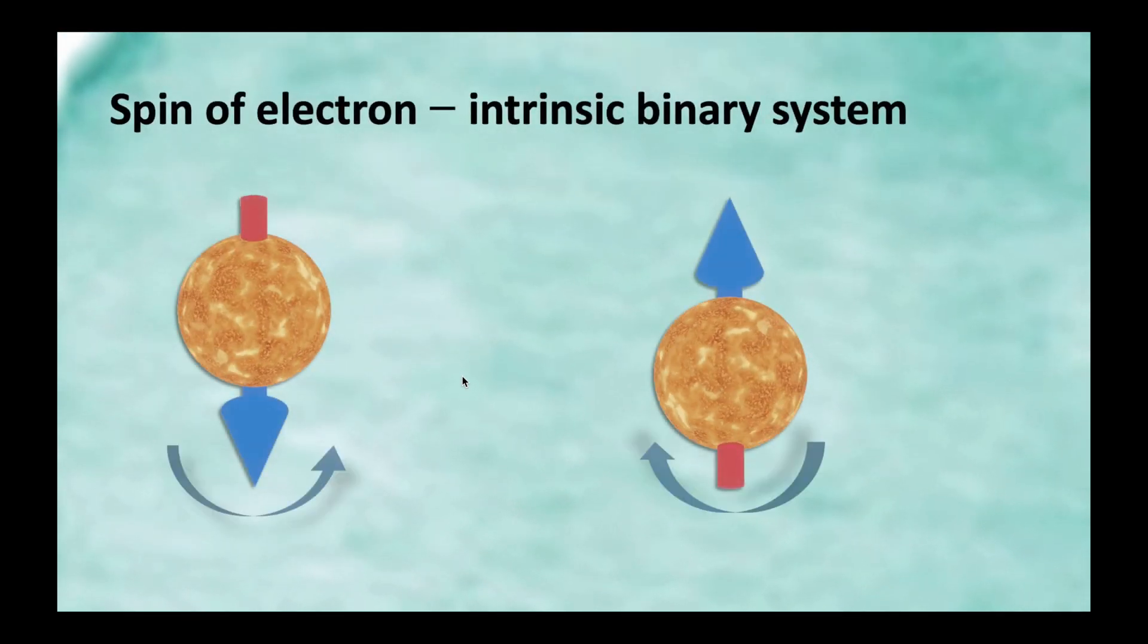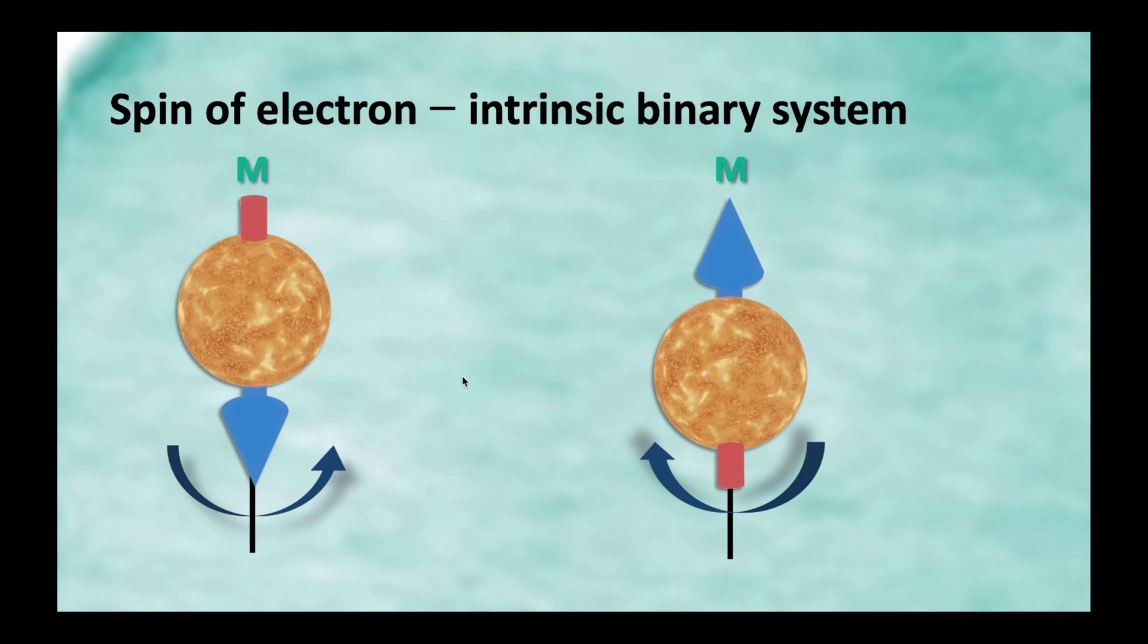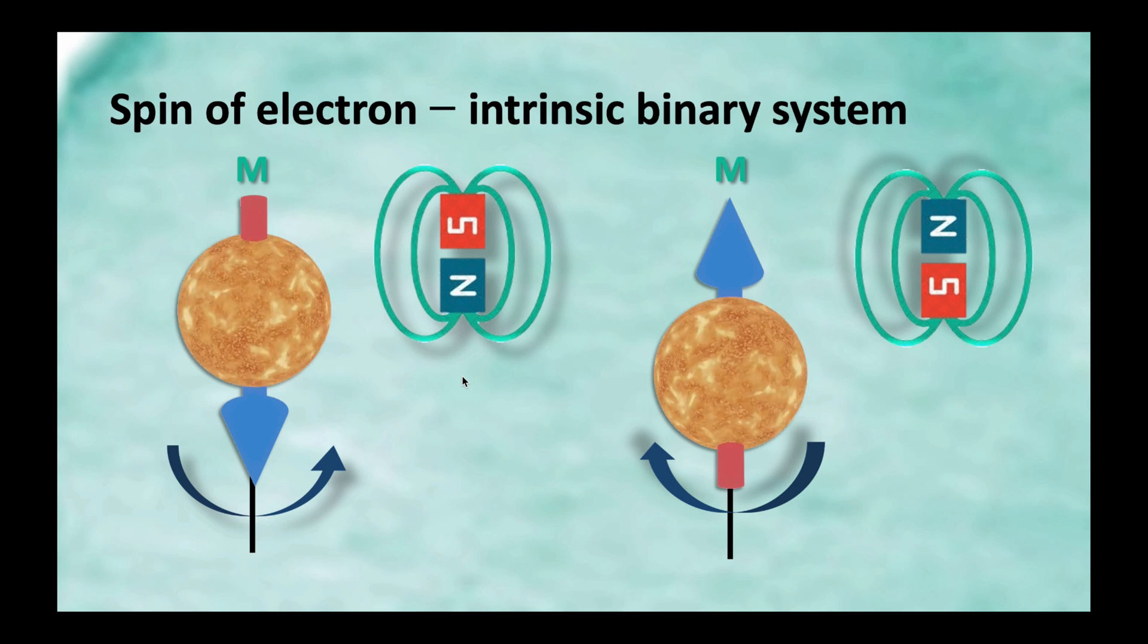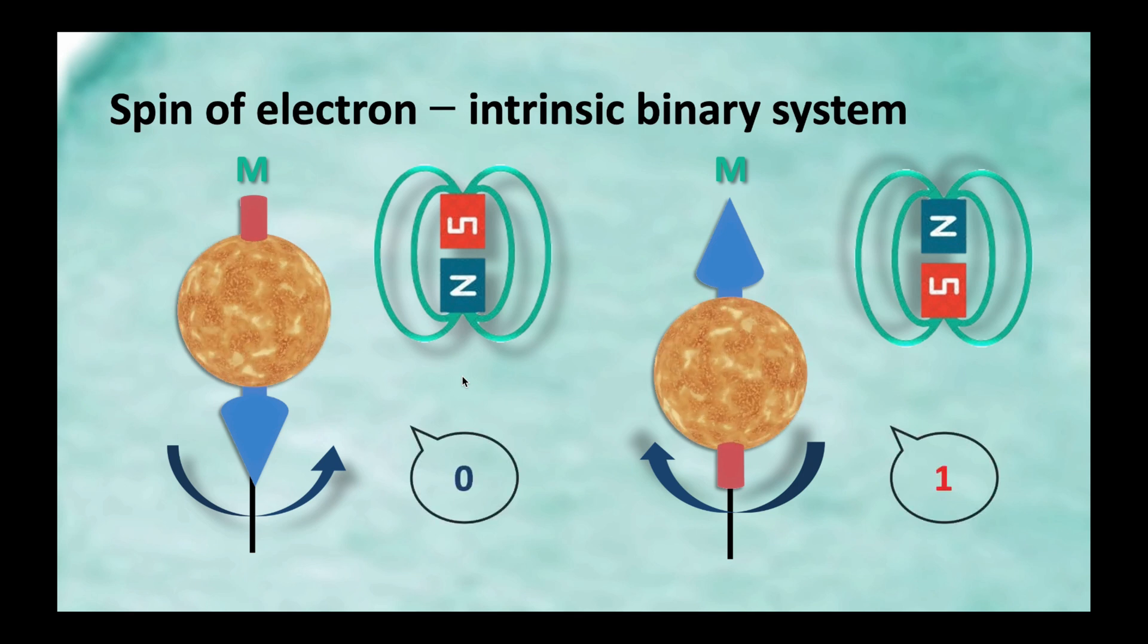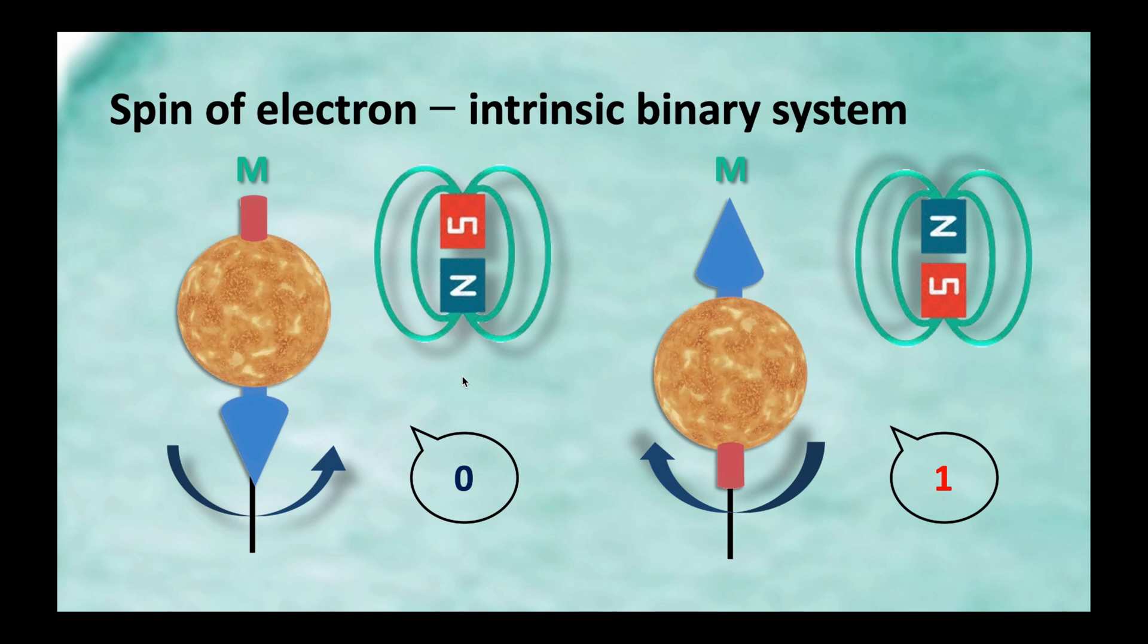Different from current, in MRAM, it utilizes the spin of electrons. Naturally, electrons are spinning and generating magnetic moments in directions either up or down, like tiny magnets. We can easily denote one direction as 0, the other as 1. While the true binary function of MRAM is determined by MR value, which we will introduce later.